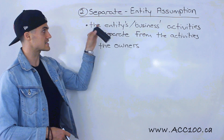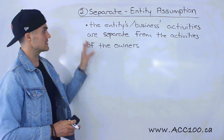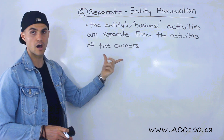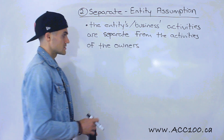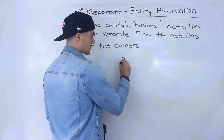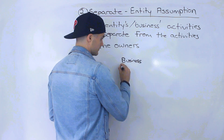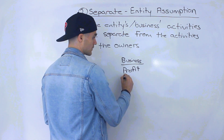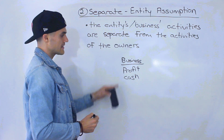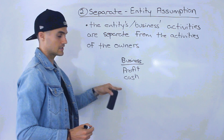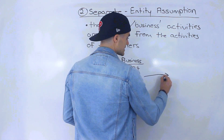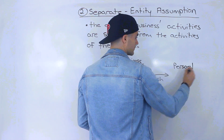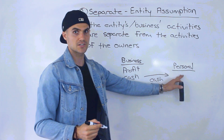The second assumption we'll talk about is the separate entity assumption, which basically assumes the entity's or the business's activities are separate from the activities of the owners. To illustrate this, let's say you started a business and your business starts being successful, starts making profits, starts generating a lot of cash, and instead of keeping that cash in the business or reinvesting it, you decide to take that cash out onto your personal side and buy some assets on your personal side.